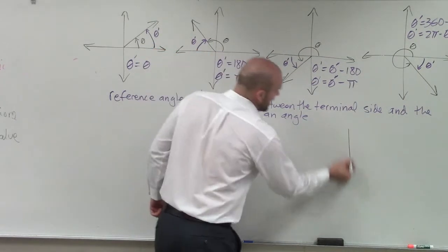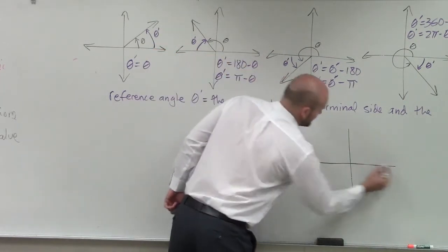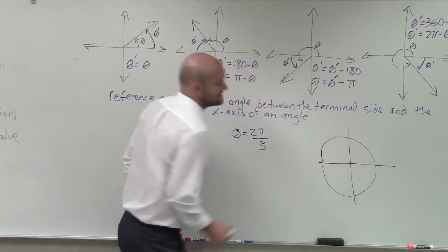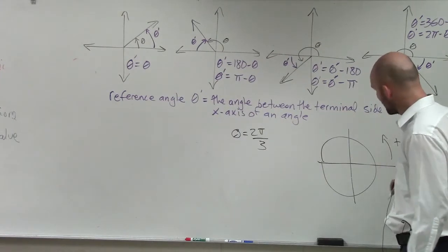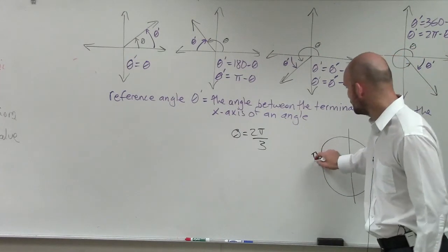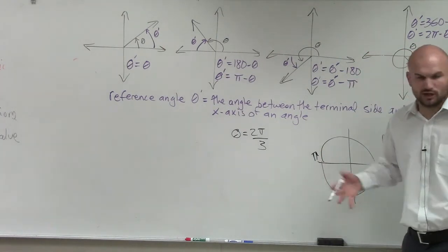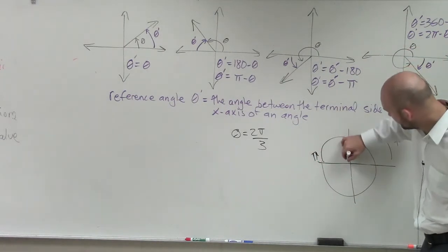So if I was going to graph 2π over 3, again, I take a circle. And I know that since this is positive, I'm going to go in the positive direction, right? Well, halfway around the circle is π, right? But we're looking at 2 thirds of π. So I break it up into thirds.